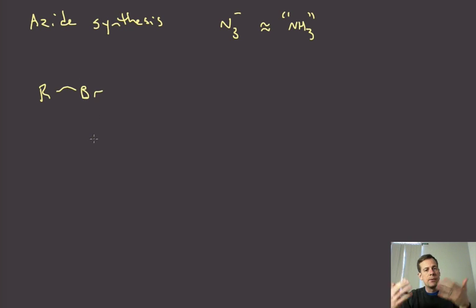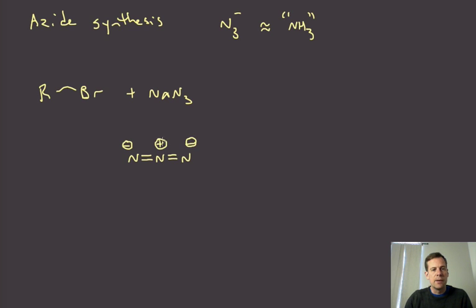So the way that this works is if we have an alkyl halide, and again, this has to be amenable to SN2 chemistry, so the same rules that we've seen before. What we can do is react this with sodium azide. And now the azide anion is three nitrogens in a row. And if you sort of draw out formal charges, you end up getting anionic charge at both ends and then a cation in the middle. So it looks a little bit funny. Those are just formal charges, of course. Overall, the whole thing just has a single anion overall.